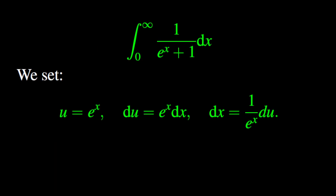In order to compute the value of this improper integral, we need to first find the antiderivative of the fraction 1 over exponential of x plus 1. As we look at this function, the only method that can be used at this stage is the substitution method. We set u equal to exponential of x, then du is exponential of x dx. Thus dx is equal to 1 over exponential of x du.